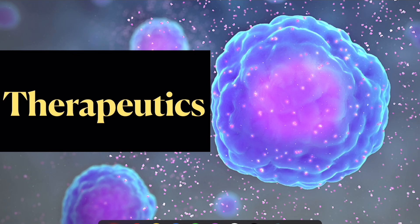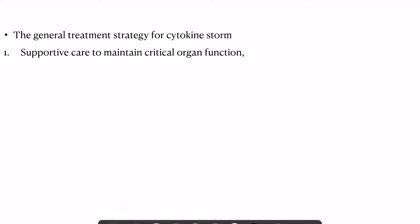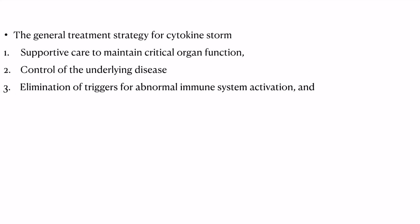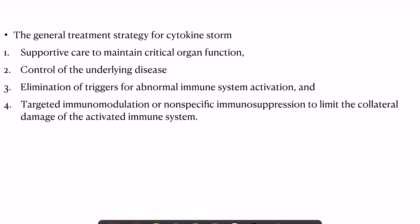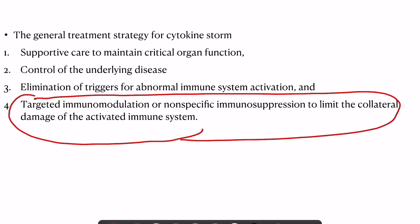Regarding treatment, the most important remains supportive care for multi-organ failure. The second priority is control of the underlying disease, as without controlling the source of sepsis or triggering agent it is nearly impossible to cure cytokine storm by blocking immunological agents alone. Third is elimination of any specific trigger causing the abnormal immune response. Fourth is targeted immunomodulation therapy to limit collateral damage. Treatment should encompass all four components rather than focusing solely on immunomodulation.